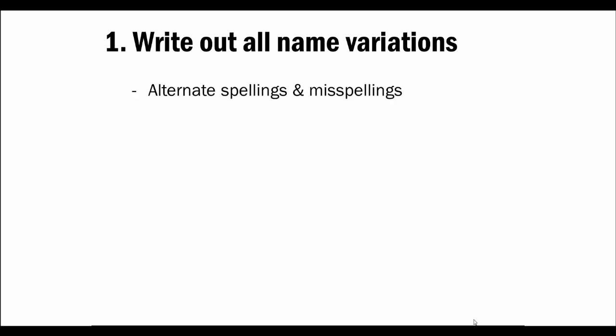Let's go through a few tips to make the most of your search for names. First, write out all the different variations in which your person's name might be written. Include alternate spellings and misspellings — historical names were frequently spelled differently. Also, if the writing on the original record is very difficult to read, it may have been transcribed incorrectly when the record was put online.